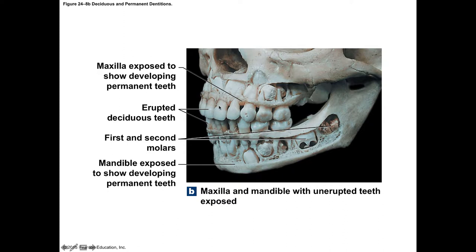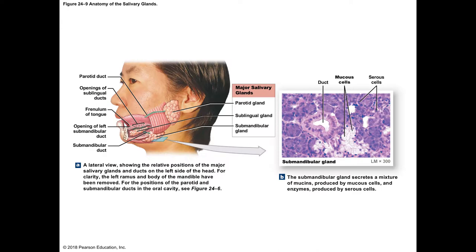Teeth have an affinity for certain substances — certain medications get absorbed into the tooth tissue. For example, the drug tetracycline, if given before teeth erupt, may cause yellow discoloration because it has an affinity for tooth tissue. If a mother takes tetracycline while pregnant, the same thing can happen to the baby's developing teeth.